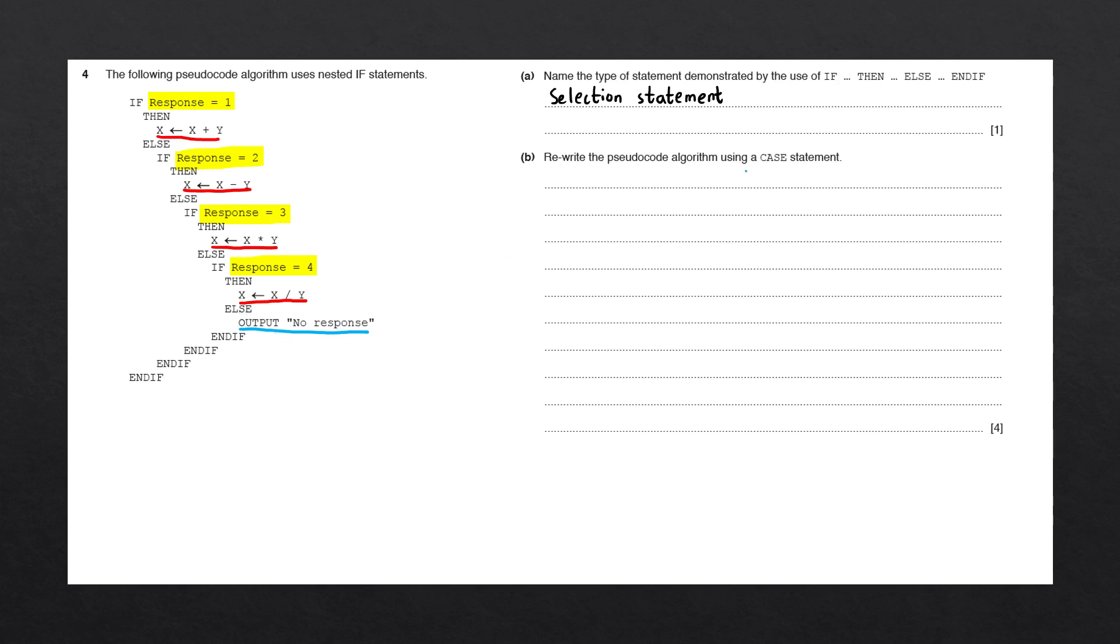With a case statement, we can have a number of cases. These cases refer to the values of a single variable. The variable being tested here is going to be response. So let's go ahead and write out the first line of the case statement: case of response. For every value that response could be, we're going to write it on a new line. We have four different values that response could be, so let's write out these four values.